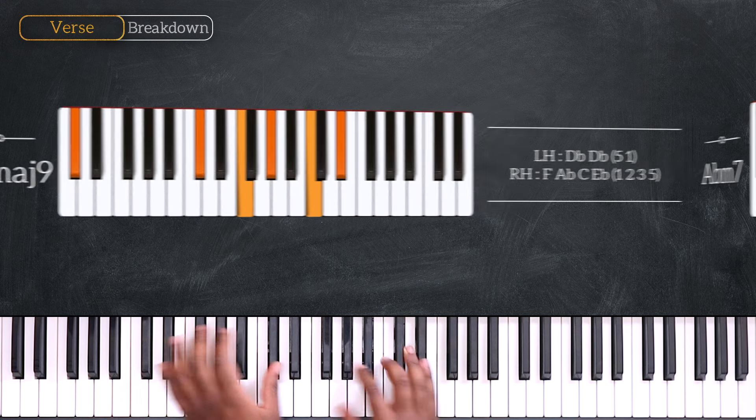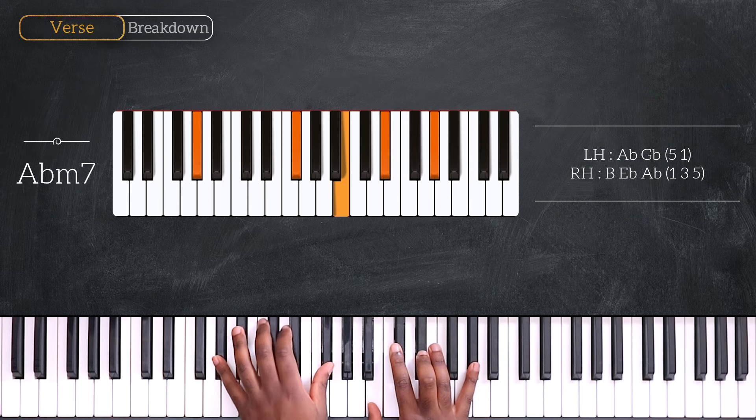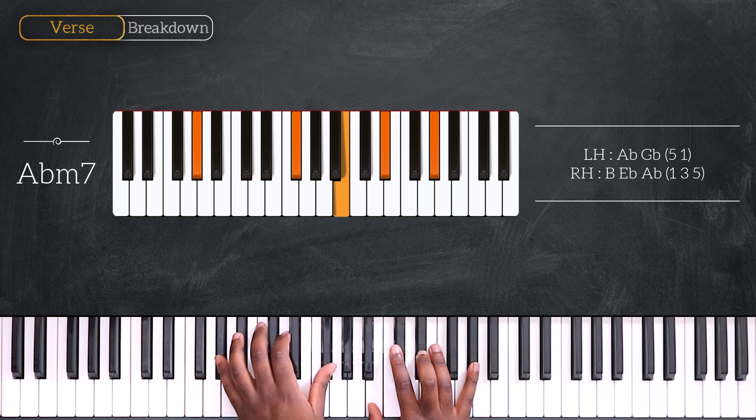Then we're going up on Ab minor, Ab minor 7, Ab and Gb, B, Eb and Ab.